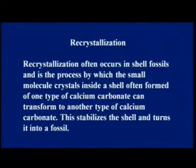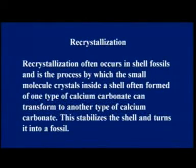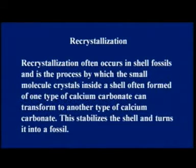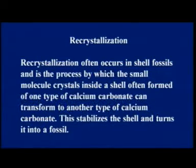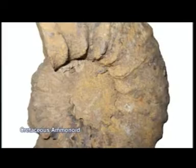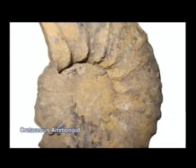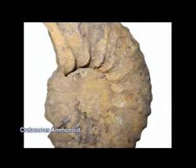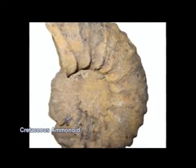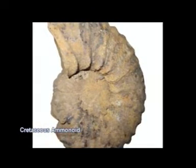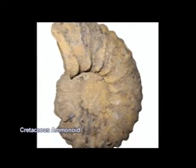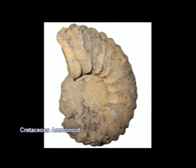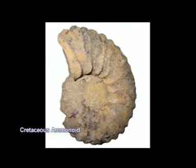Some recrystallization can also take place. Suppose a fossil is made up of aragonite — aragonite is calcium carbonate but is not very stable — so an aragonite fossil whose shell is made of aragonite mineral may be gradually replaced and recrystallized as calcite, which is more stable. This recrystallization from aragonite to calcite gives the fossil more stability and better preservation over a large span of time.